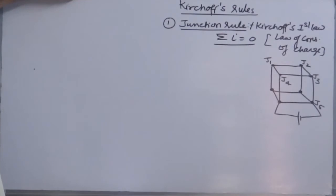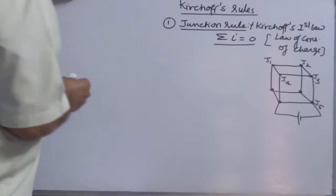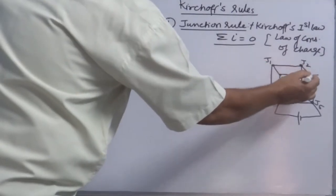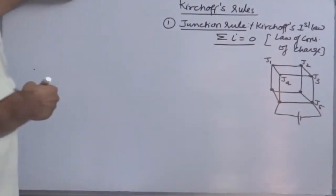Do I need to deal with each and every junction in every problem? Answer is no. You will do as per your requirement. So this rule is applicable at a time for one junction, any one junction you choose as per your requirement.